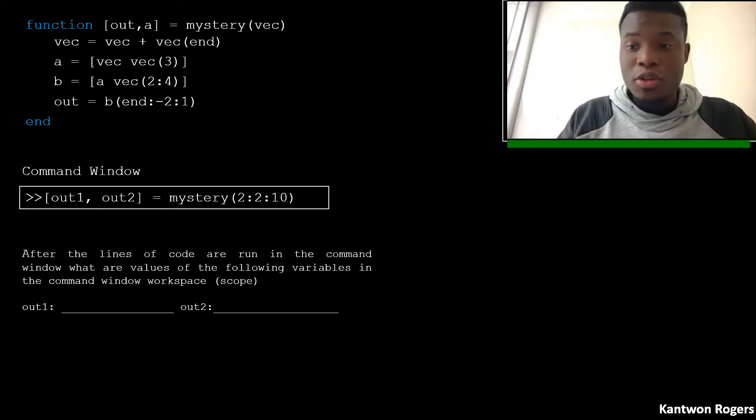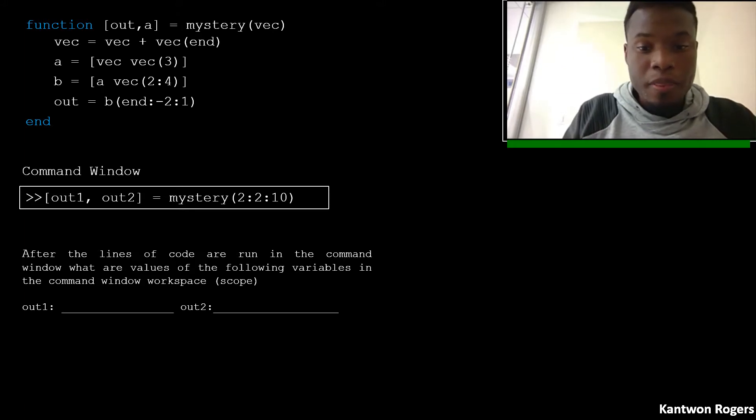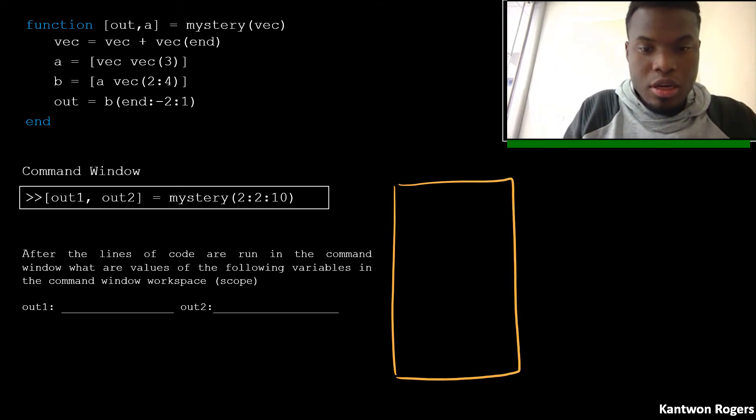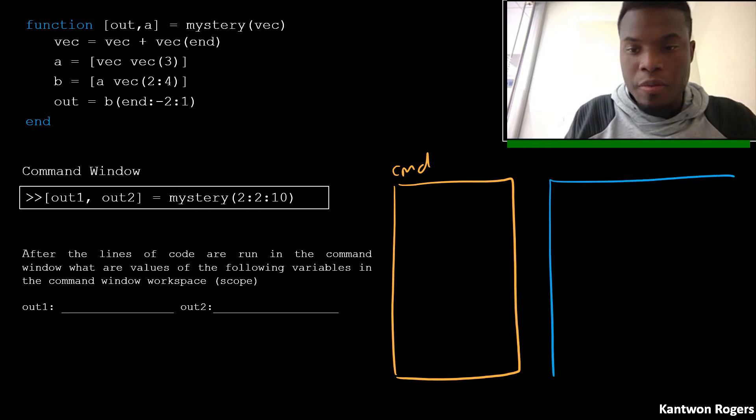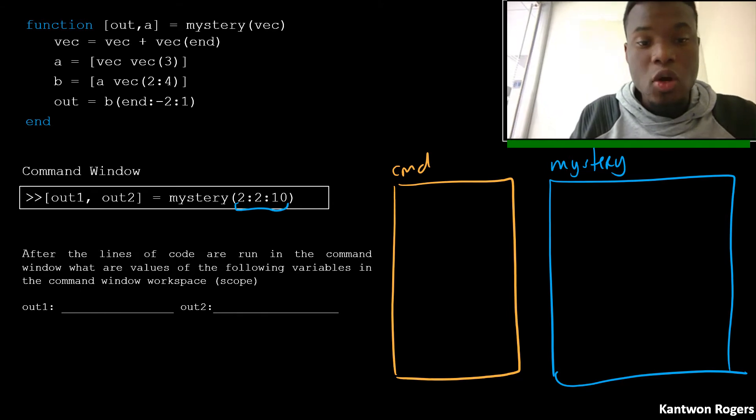Alright, so let's go over this problem. The first thing that happens is we are creating a vector and placing it directly inside of our function. So for clarity, let's create our command window. We're opening up another workspace for our mystery. The first thing that happens is we're creating this vector using the colon operator.